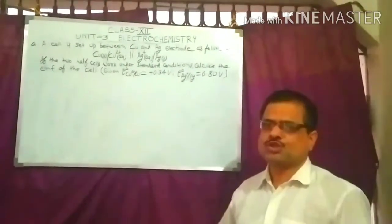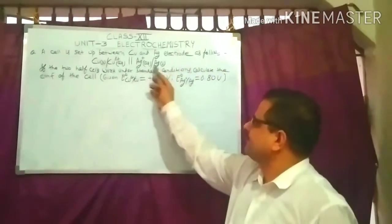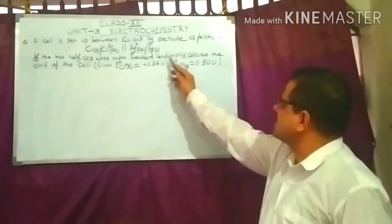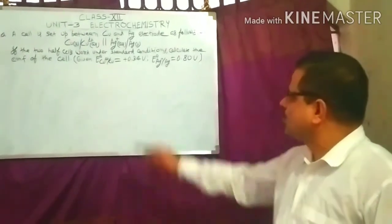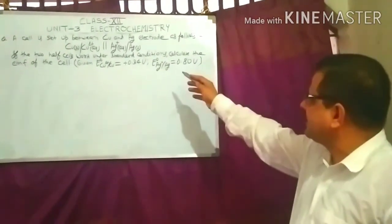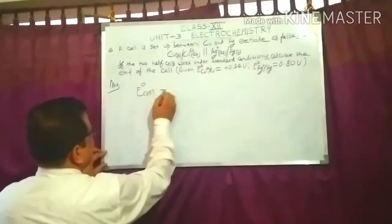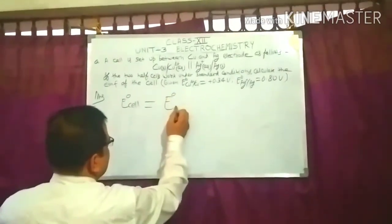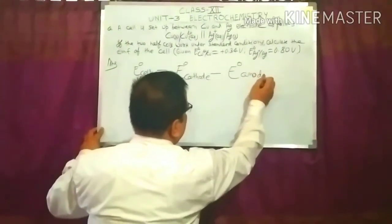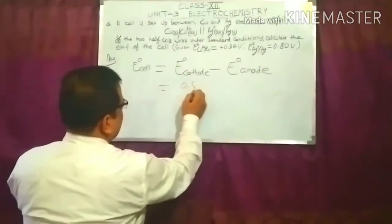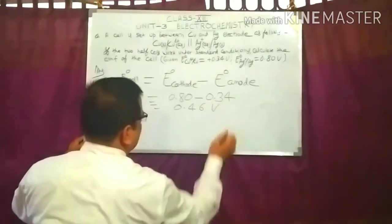Let us solve a numerical problem. A cell is set up between copper and silver electrodes. If the two half-cells work under standard conditions, calculate the EMF of the cell. From the standard electrode potential values, copper acts as anode and silver acts as cathode. Therefore, E⁰(cell) = E⁰(cathode) − E⁰(anode) = 0.80 − 0.34 = 0.46 V.